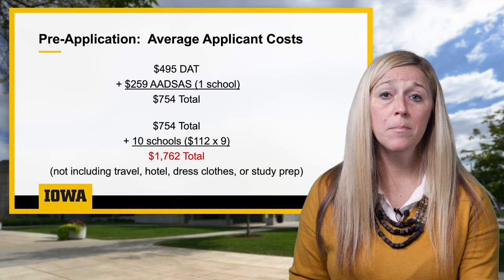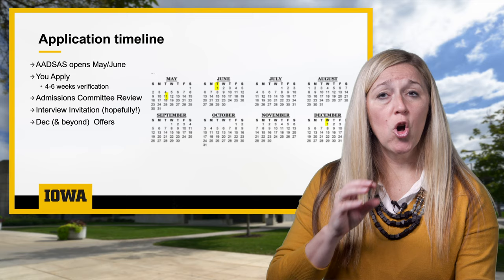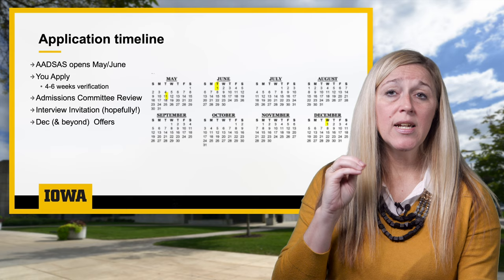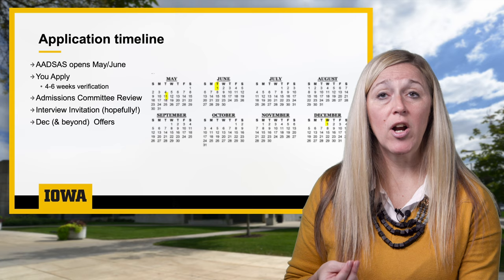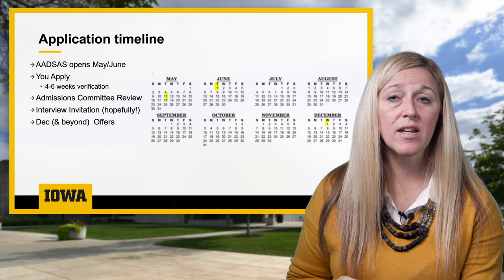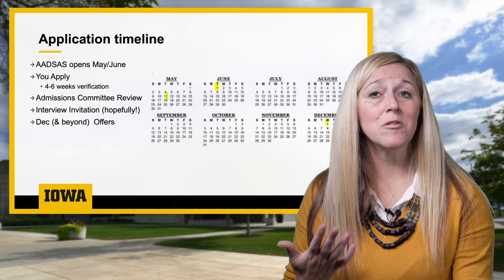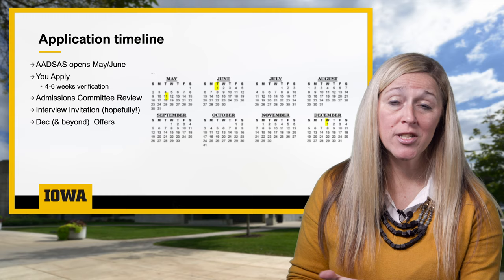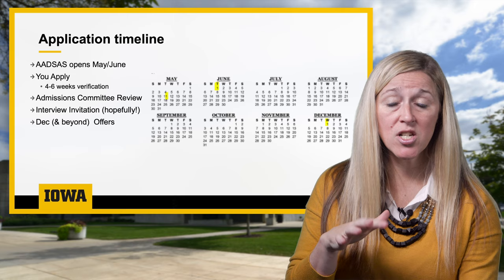As far as the timeline: ADSAS opens in May, submission begins in June. After you hit the submit button, ADSAS states it will take four to six weeks to verify your application — they're fact-checking your transcripts. The fastest I've seen verification happen is within 24 hours. Schools aren't just taking their sweet time — we're often waiting for your transcripts to be processed. The sooner you submit with your DAT, transcripts, and letters of evaluation in order, the sooner you'll hear from Iowa.